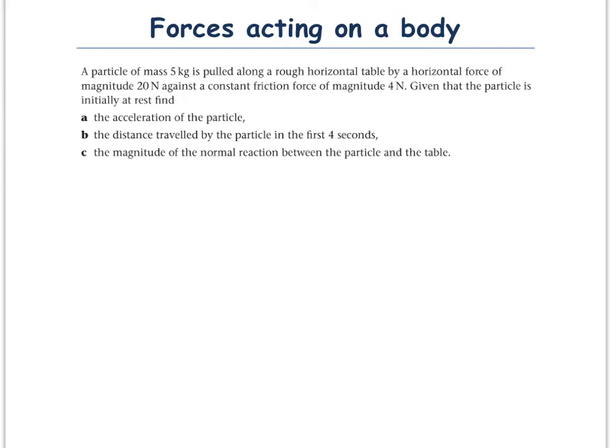Forces acting on a body. This is a very easy example of forces acting on a body. Now, like with all Mechanics 1 questions, it is very important that you draw a diagram and highlight the key points in the question. A particle of mass 5 kilograms is pulled along a rough horizontal table by a horizontal force of magnitude 20 newtons against a constant friction force of magnitude 4 newtons. Given that the particle is initially at rest,